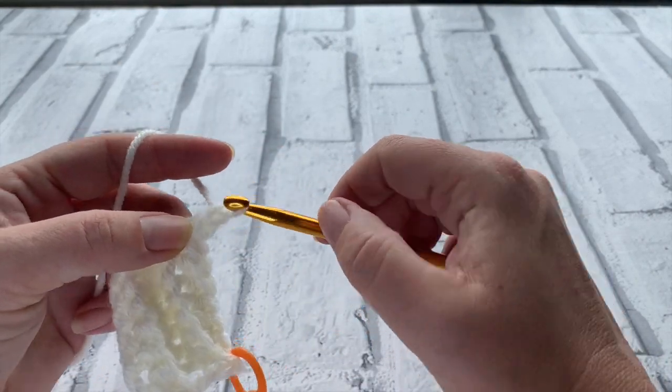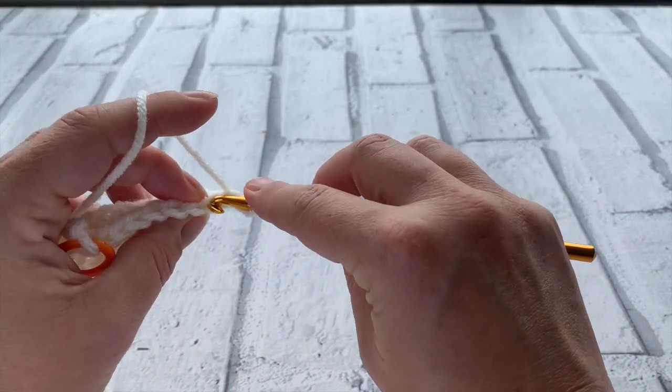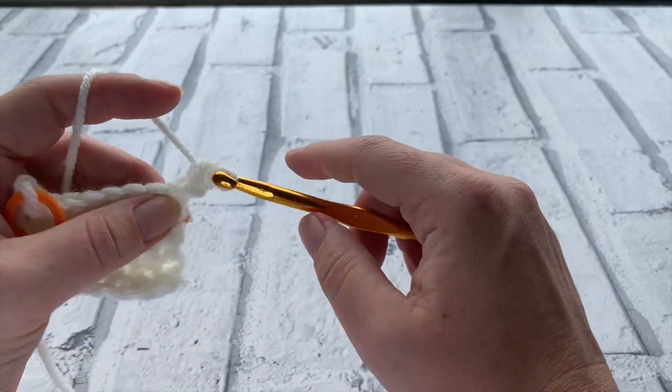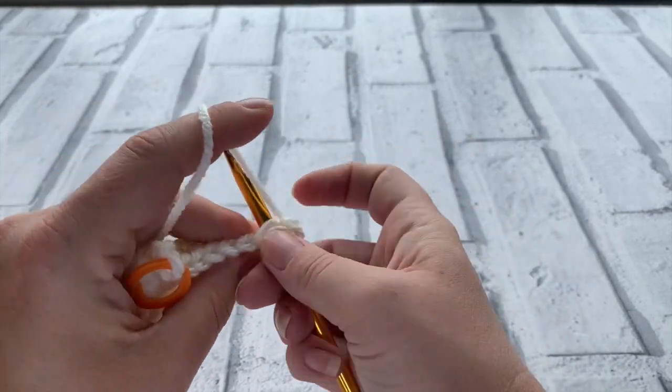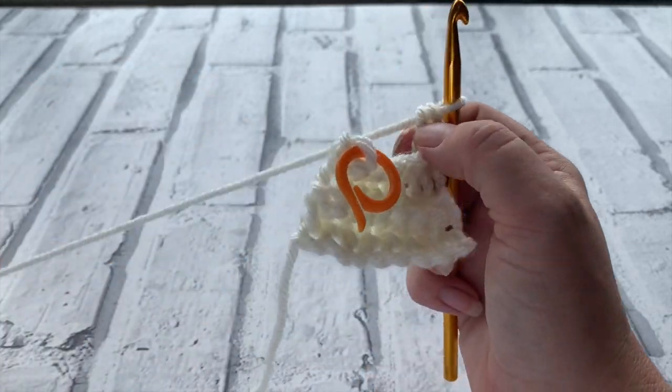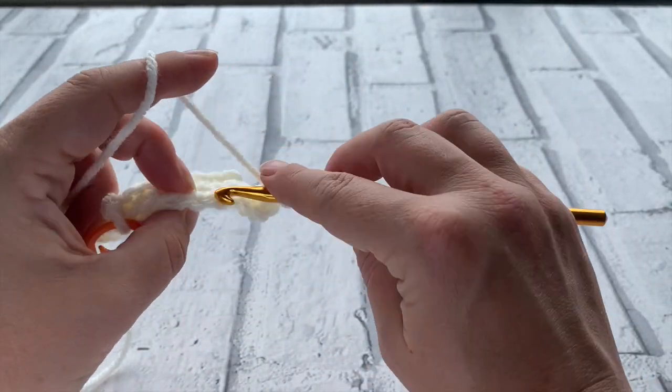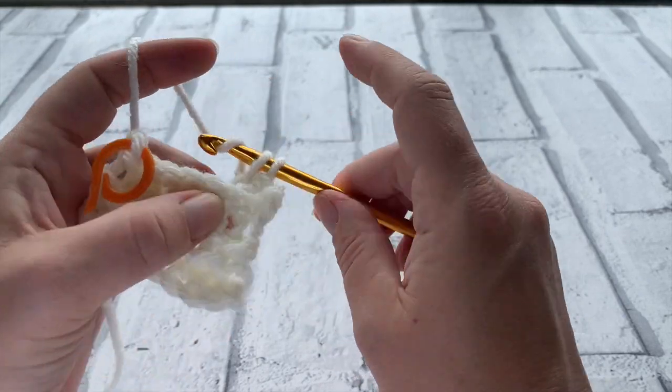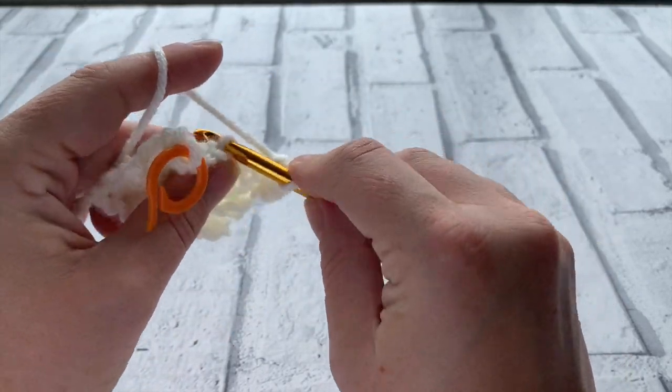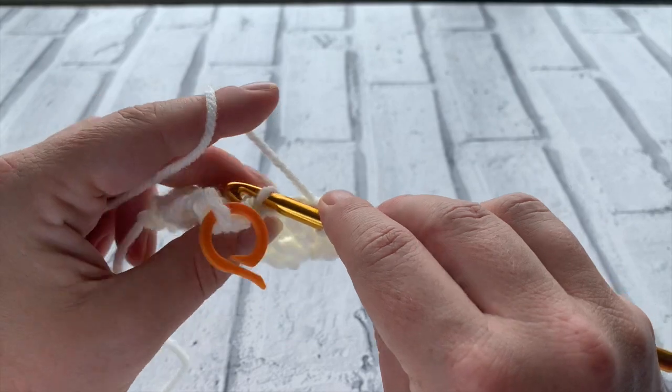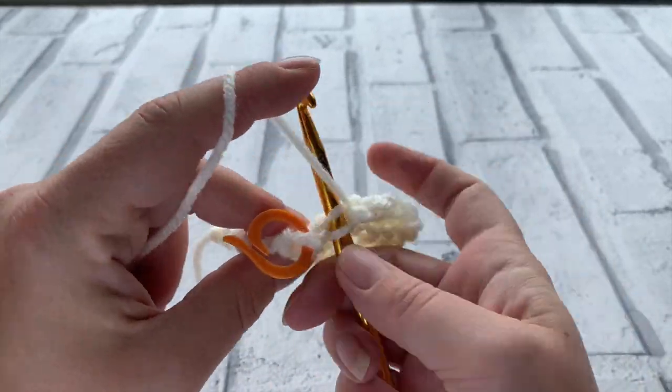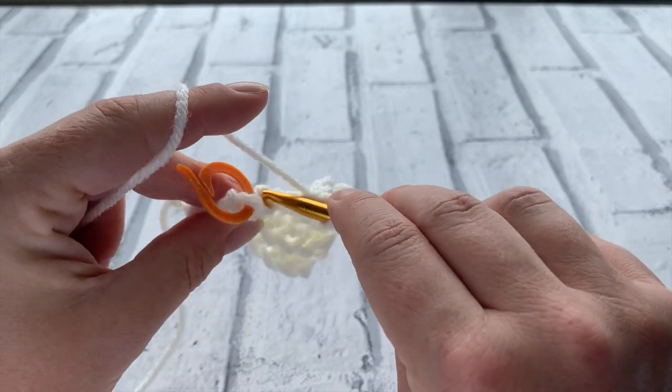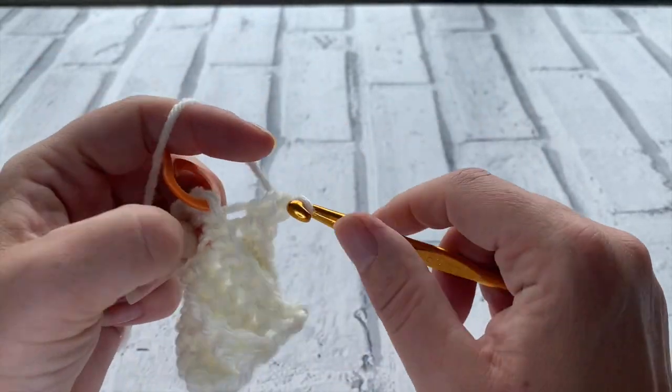So again just remember it's chain one to turn, work that first stitch, pop your stitch marker in if you want to into your first stitch that you've made and then continue to work in your back loops only on every single row placing a double crochet into each stitch as well. So I'm going to show you how much easier this stitch marker makes it when you can see that last stitch because it is easy for them to disappear.